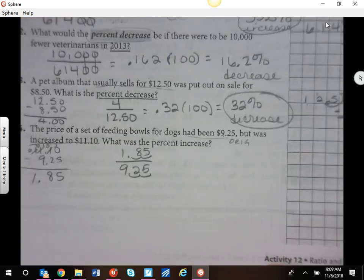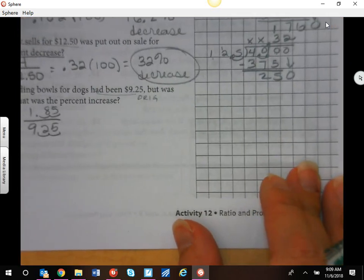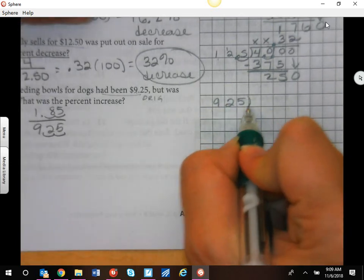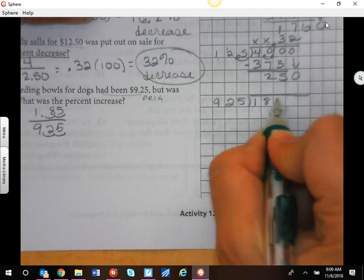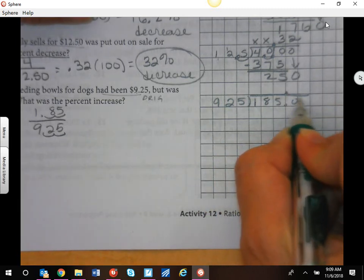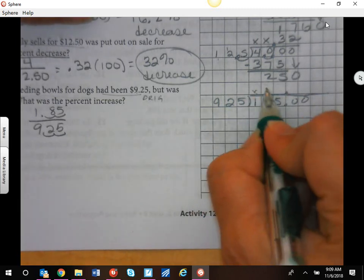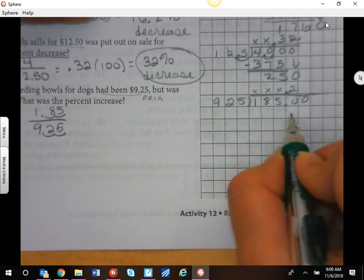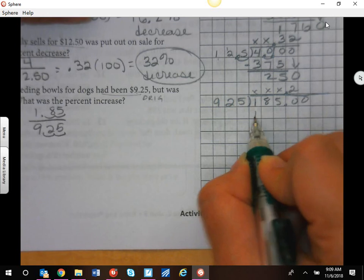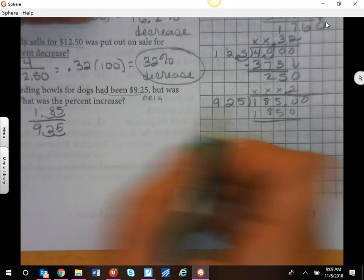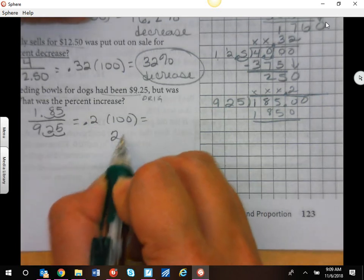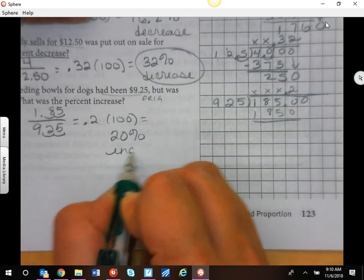The original is $9.25. I'm going to go ahead and move my two decimal places. So I have $9.25 into $1.85. I already moved my decimal, so that's a nice thing. $9 times 2 is 18, and $0.25 times 2 is 50. So 0.2 times 100 is a 20% increase.